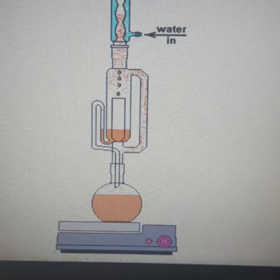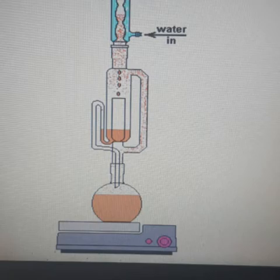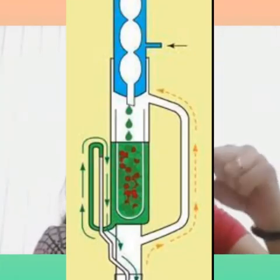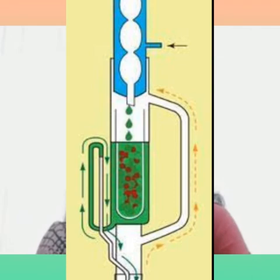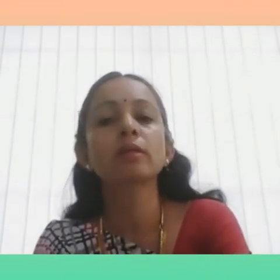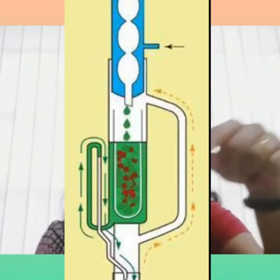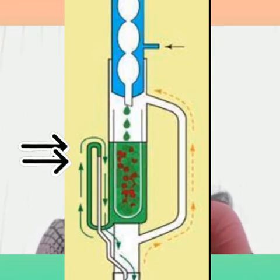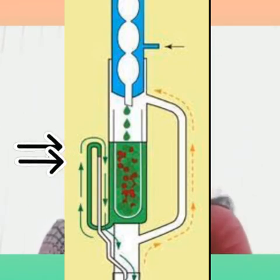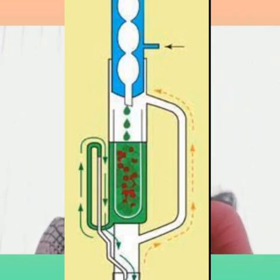When the bottom flask is heated, the solvent boils and the vapor rises through the branch pipe of the extractor up to the condenser, where it is condensed by chilled water being circulated. It then falls onto the thimble, gets in contact with the substance, and extracts the bioactive principles and secondary metabolites present in it. The extract settles in the inner portion of the extractor, and when the solvent surface exceeds the highest point of the siphon, the solvent containing the extract is siphoned back into the round-bottom flask.